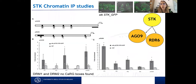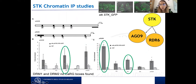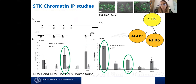We wanted to connect the dots and understand the connection between Seedstick, ARGONAUTE9, and RdDM pathway members. We performed chromatin immunoprecipitation (ChIP) studies using the seedstick mutant complemented with a Seedstick-GFP fusion protein. We detected three enriched regions: one fell into the promoter of ARGONAUTE9, and two into the promoter of RDR6. We were able to show that Seedstick can bind directly to ARGONAUTE9 and RDR6 promoters, activating them, since both are downregulated in the seedstick mutant background.